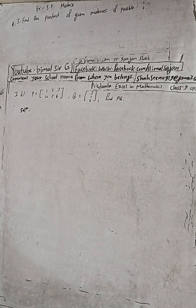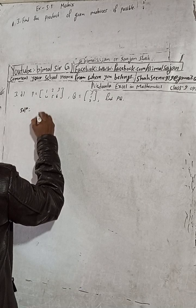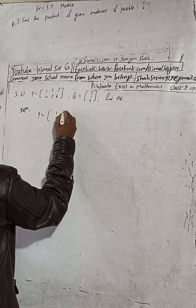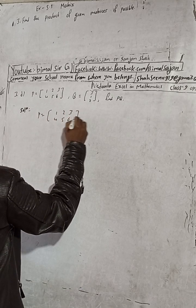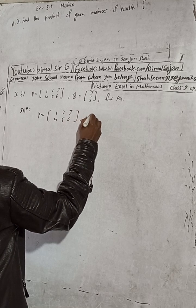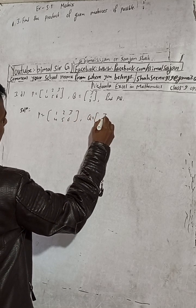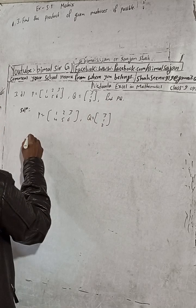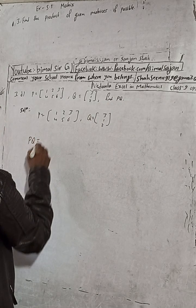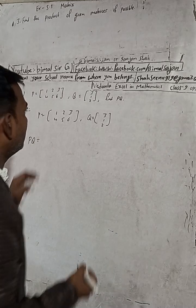Question number 3d: matrix P is equal to 1, 2, 3, 4, 5, 6 and Q is given as 3, 1, 2. We have to find PQ. To find PQ, first check whether the product is possible or not.